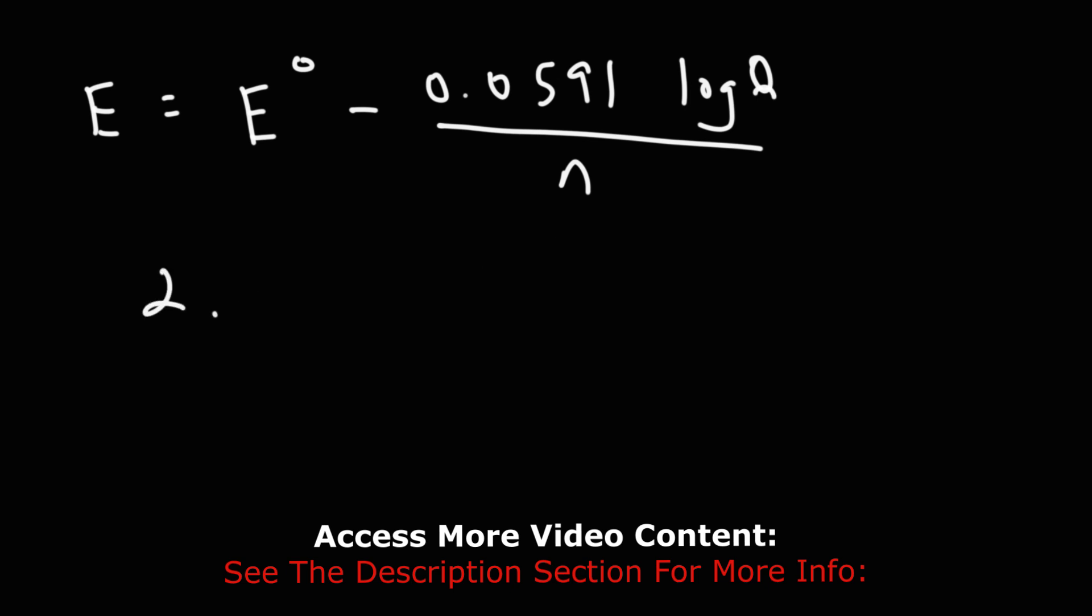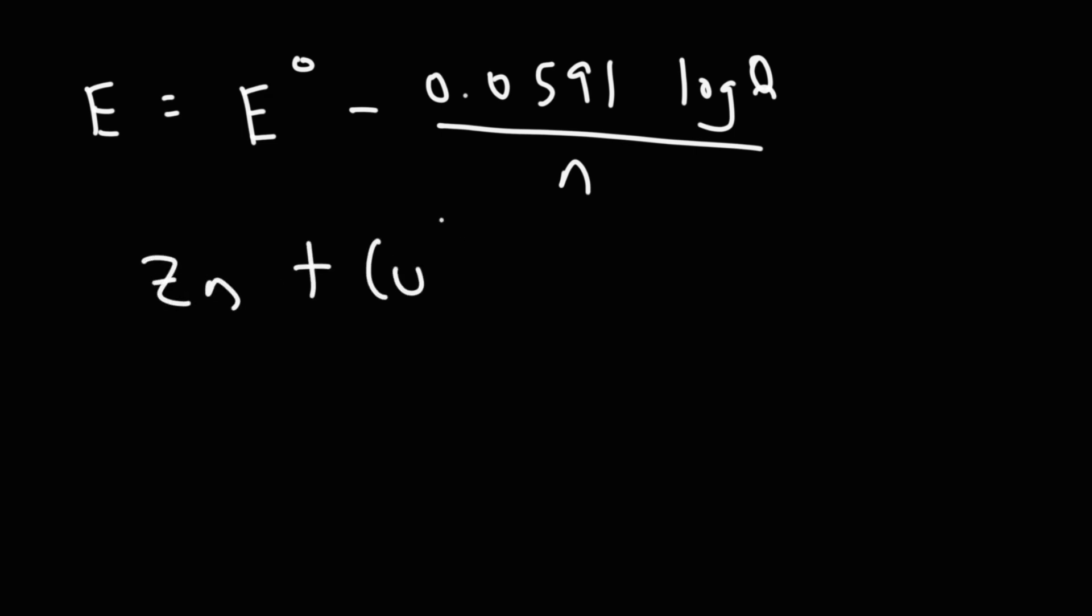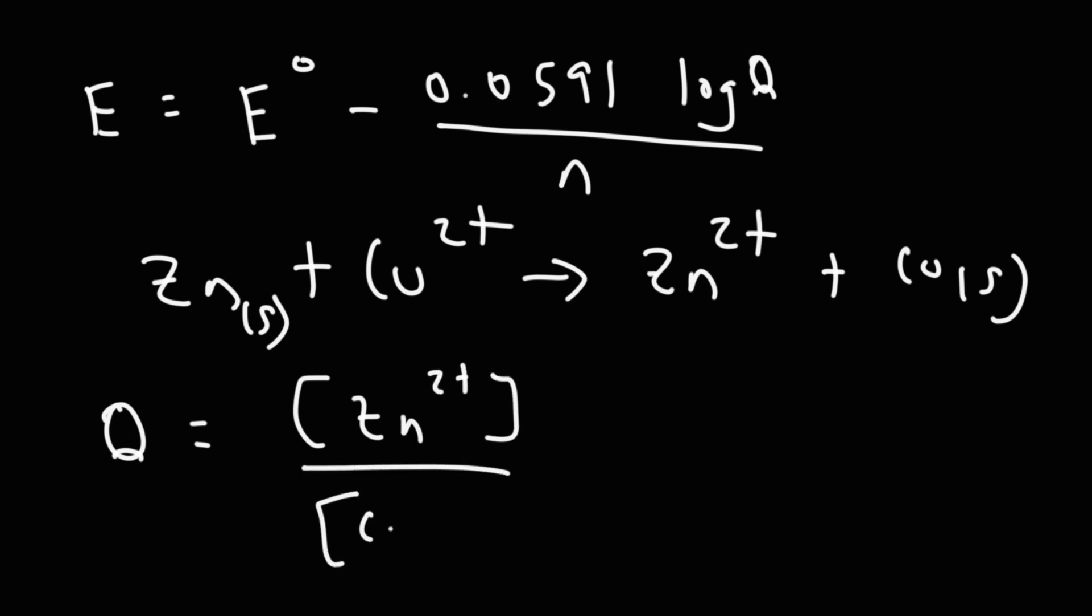Now if you're wondering what Q is, let's use a specific example. Let's say we have zinc metal reacting with copper 2 plus and it turns into zinc 2 plus and copper metal. The reaction quotient Q is calculated in a very similar way as the equilibrium constant K - it's products over reactants. Now zinc metal and copper metal, those are in the solid state, so you don't include that in the equilibrium expression, neither would you include that for the reaction quotient Q. So it's going to be the products, zinc 2 plus, over the reactants, copper 2 plus. The coefficients are one, so the exponent will be one. If we had a 2 or 3 then that would affect the corresponding exponents. That's how you would calculate the reaction quotient Q.